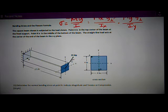I've got a square beam, 4 by 4, 4 inches square. Point A is in the top corner. Point B is at the bottom and the middle at the fixed support. I need to figure out the normal bending stresses at those two points.